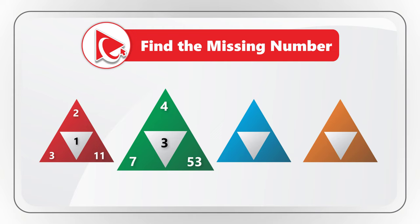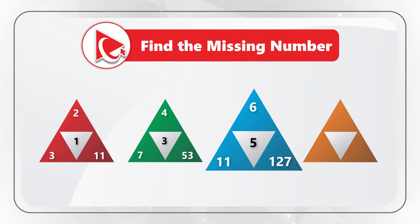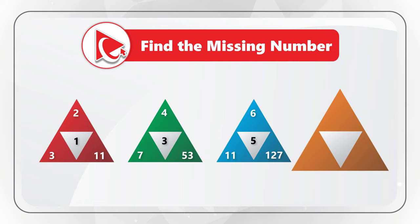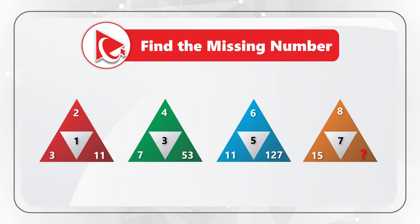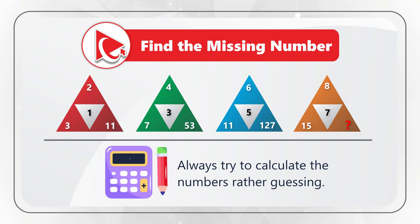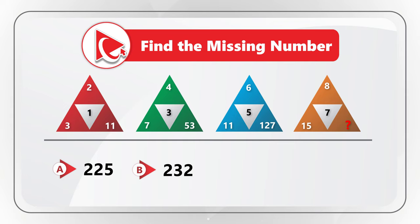The third triangle has numbers 11, 6, 127, and number 5 in the middle. The fourth triangle has the missing number, but also has numbers 15, 8, and 7. Can you take a close look to see if you can come up with the answer? You do not need to guess the number but rather calculate it. Choices are A: 225, B: 232, C: 233, D: 240. Take a close look to see if you can solve this challenge.